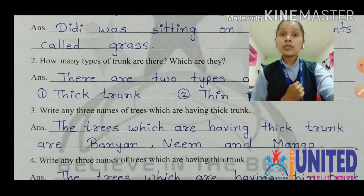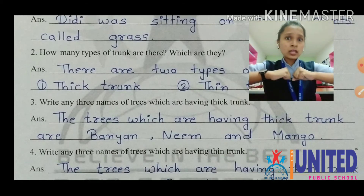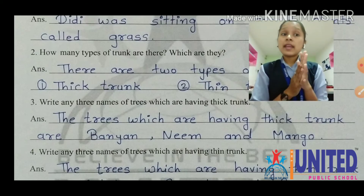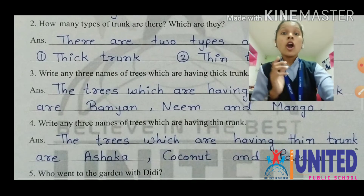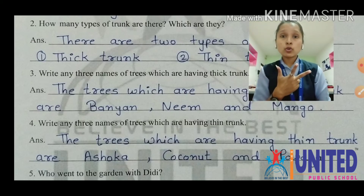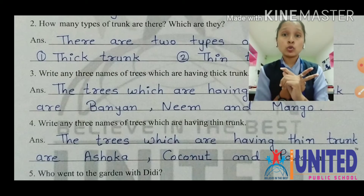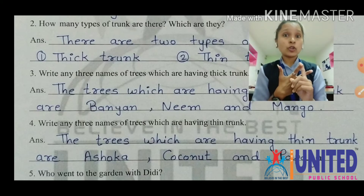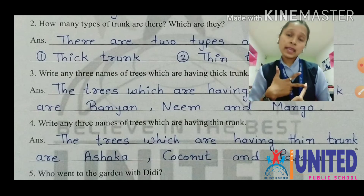Number four: write any three names of trees which have a thin trunk — not thick but thin trunk. The trees with thin trunks are Ashoka, coconut, and papaya. Ashoka spelling is A-S-H-O-K-A. Coconut is C-O-C-O-N-U-T. And papaya is P-A-P-A-Y-A.